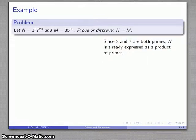We won't go into the details here, but 3 and 7 are both prime numbers, so n is already expressed as a product of prime numbers. 5 threes, 20 sevens, multiply them all together, you get n.